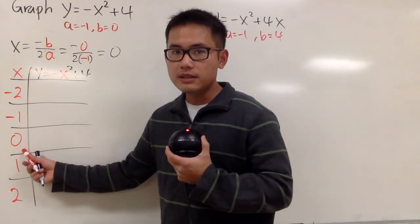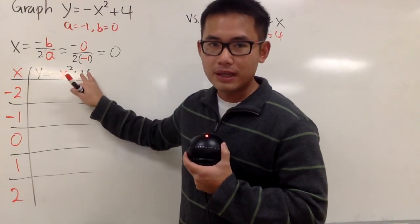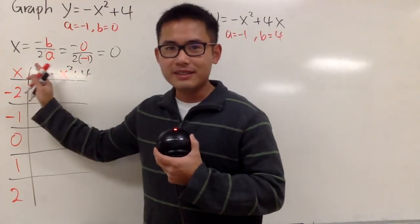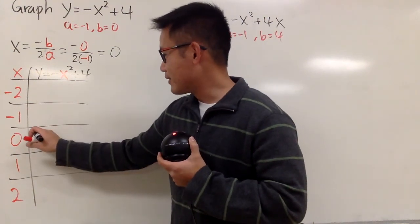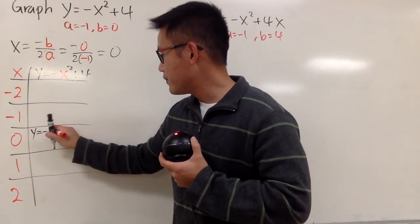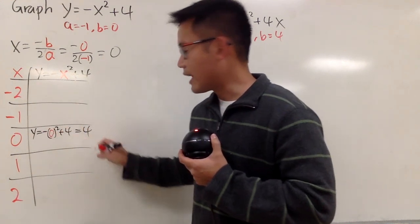And now, if you plug in 0 into this x, you get negative 0 squared plus 4. This is plus 4 right here. Hopefully, you guys can see. I know there's a little glare. But yeah. Anyway, I'll write this down for you guys. y equal to negative 0 squared plus 4, and you get 4 for that.